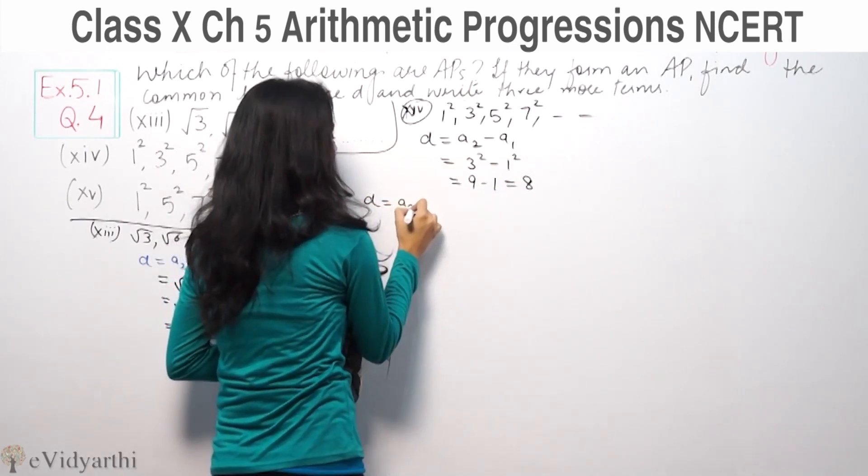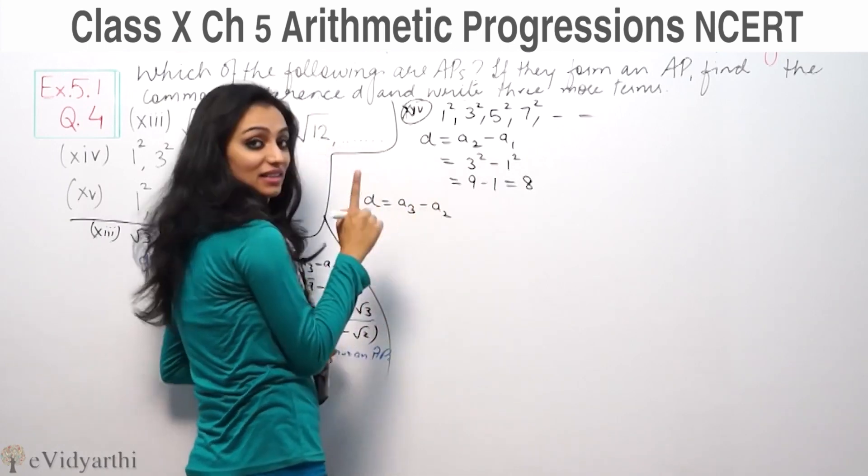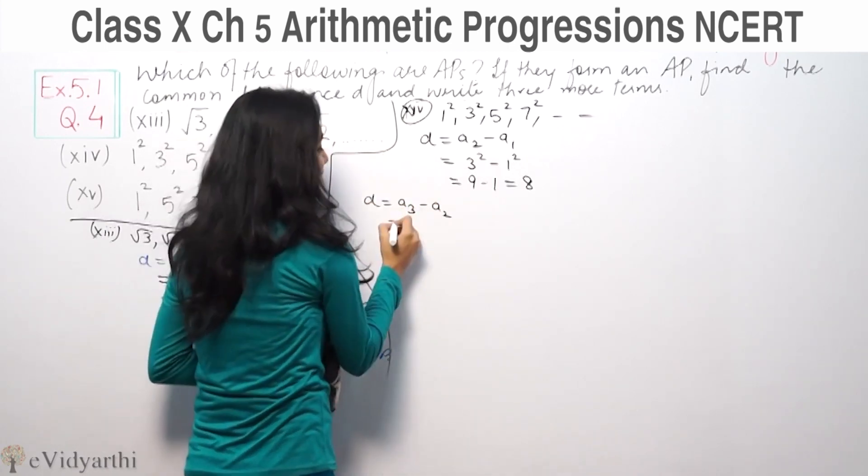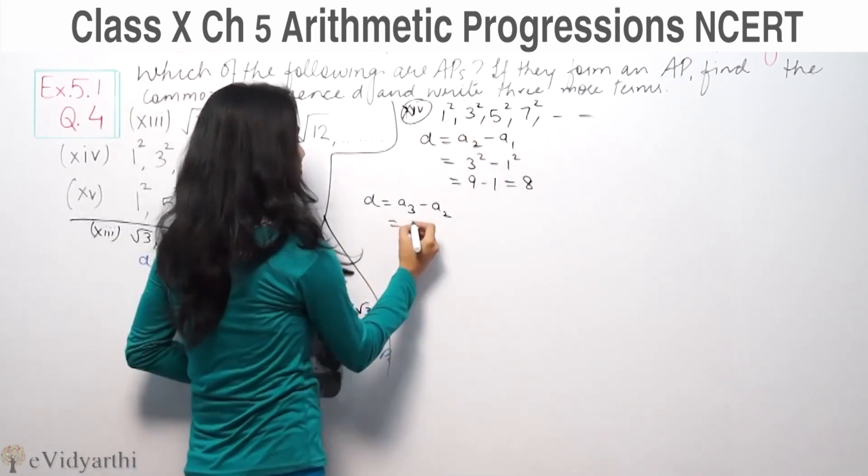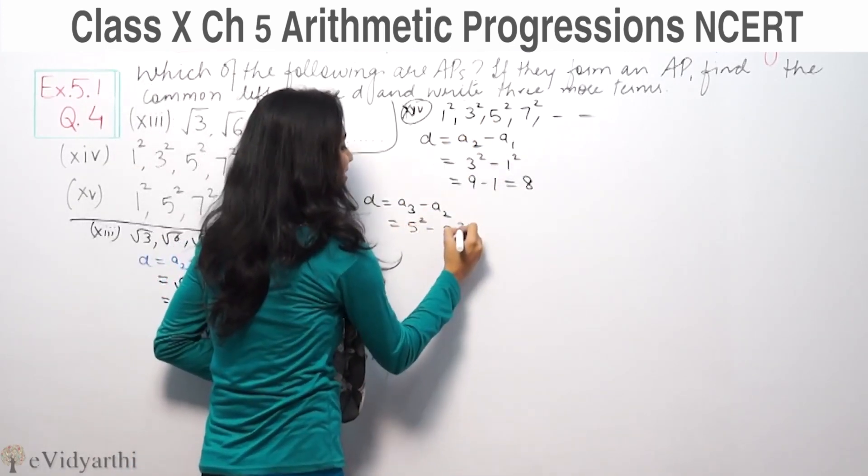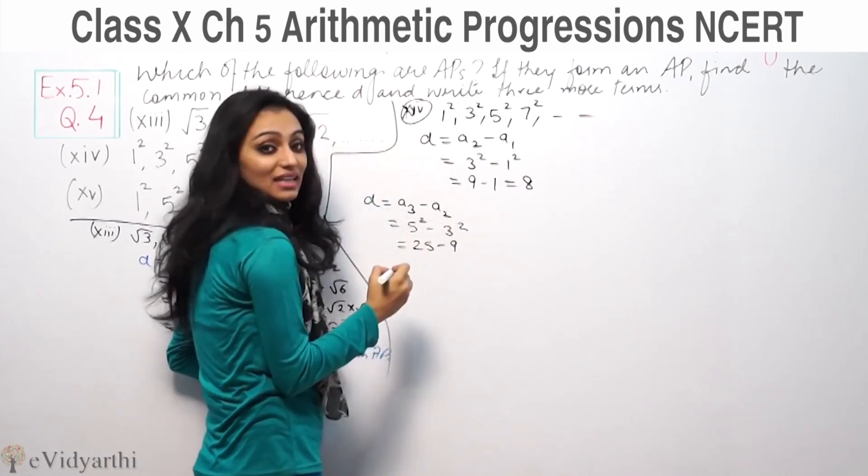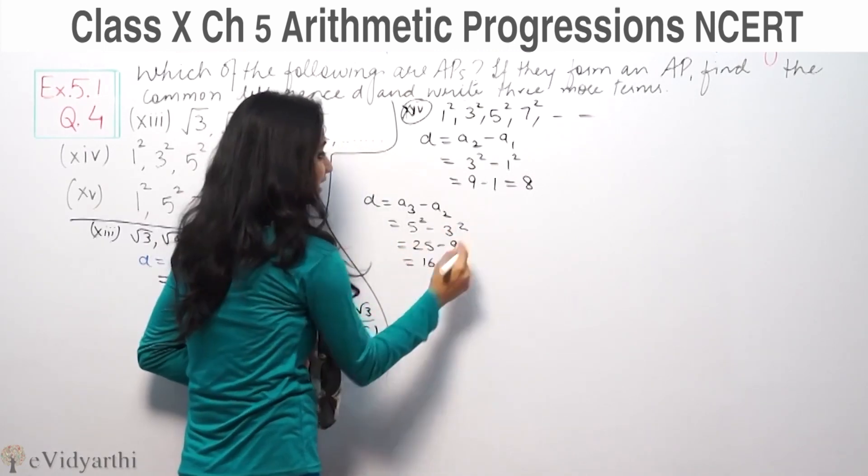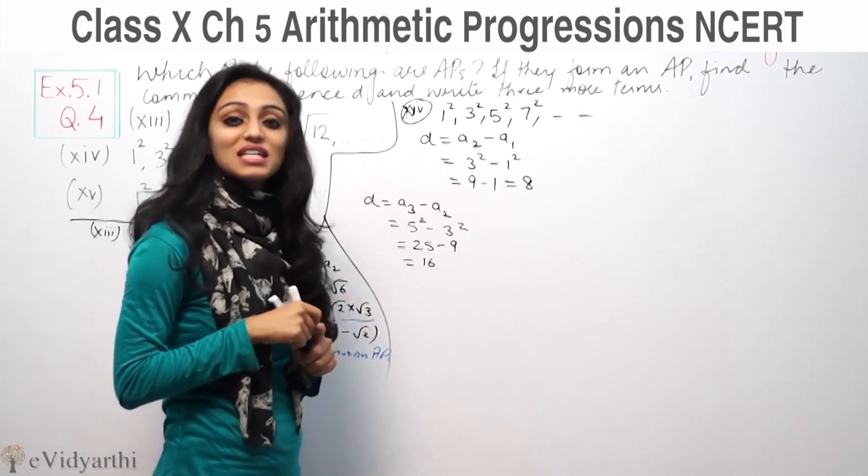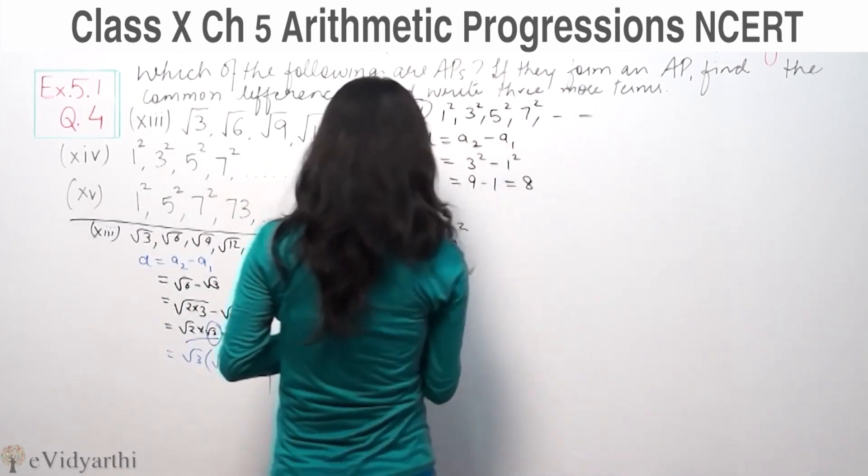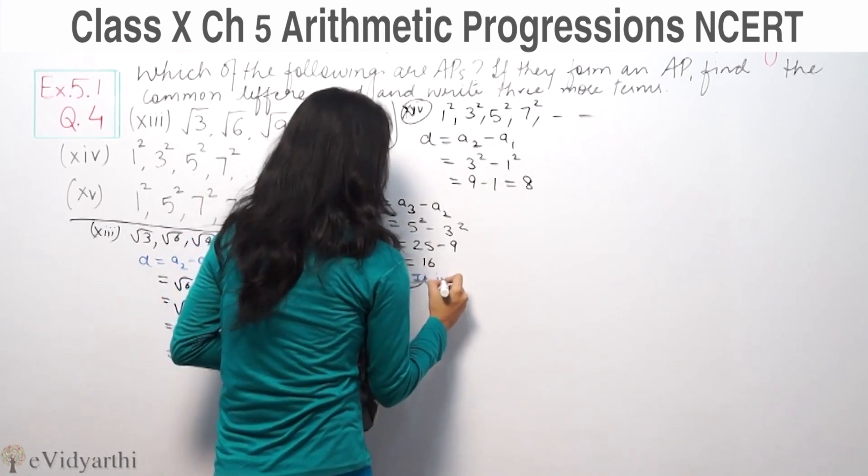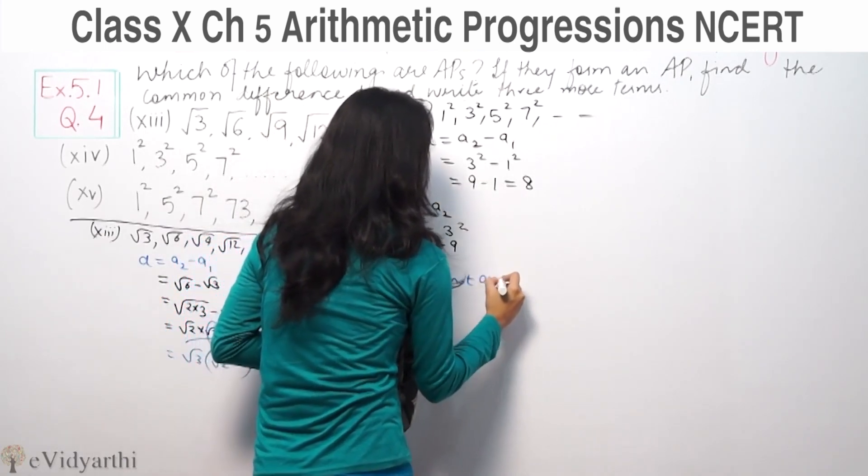Same way check D equals A3 minus A2. Third term minus second term. Third term is 5 square, 5 square minus 3 square means 25 minus 9, which is 16. Common difference is not the same. Therefore, this is not an AP.